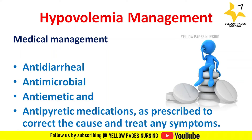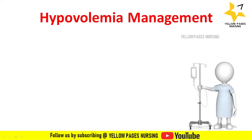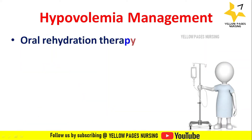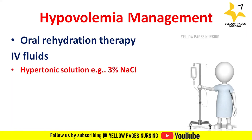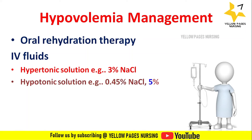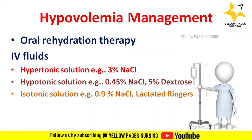IV fluid options include: hypertonic solution (e.g., 3% sodium chloride), hypotonic solution (e.g., 0.45% sodium chloride, 5% dextrose), isotonic solution (e.g., 0.9% sodium chloride, lactated Ringer's solution), colloid solution (e.g., dextran), and blood transfusion.